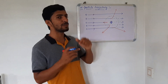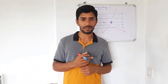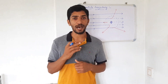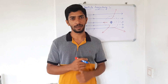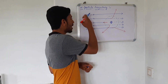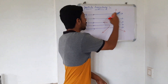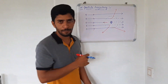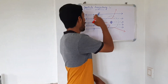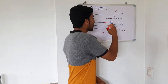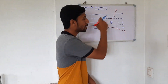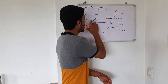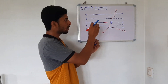Alpha particle trajectory is the path followed by alpha particles in the gold foil experiment, also called the alpha particle scattering experiment. In the diagram, the tiny dots are alpha particles, the blue lines represent their initial velocity vectors, and the red line represents the deviation in the alpha particle path. The dotted circle represents the gold atom inside the gold foil.